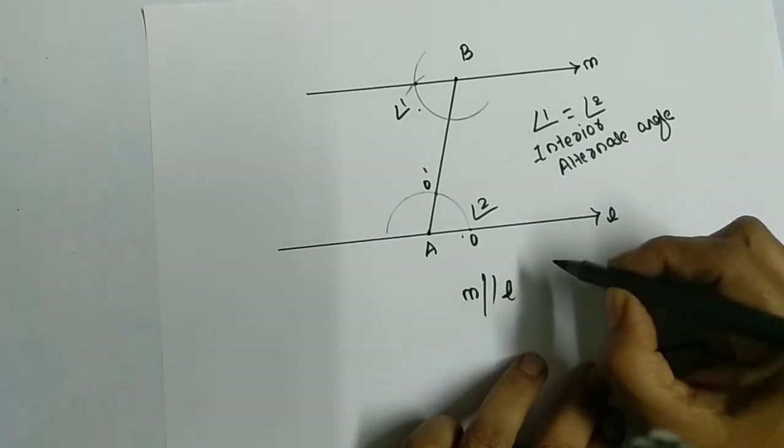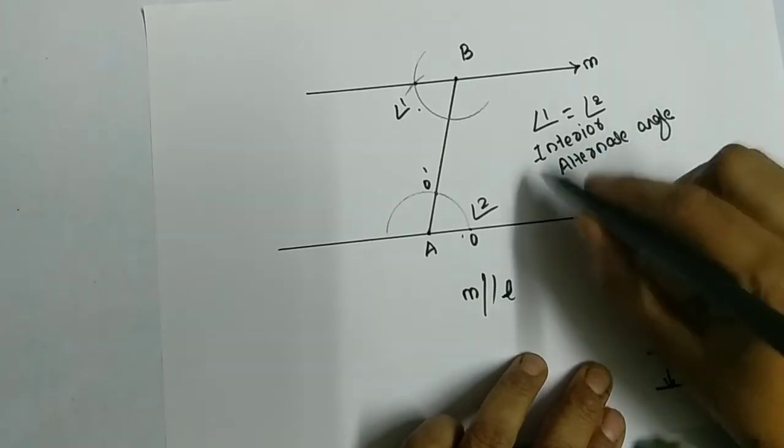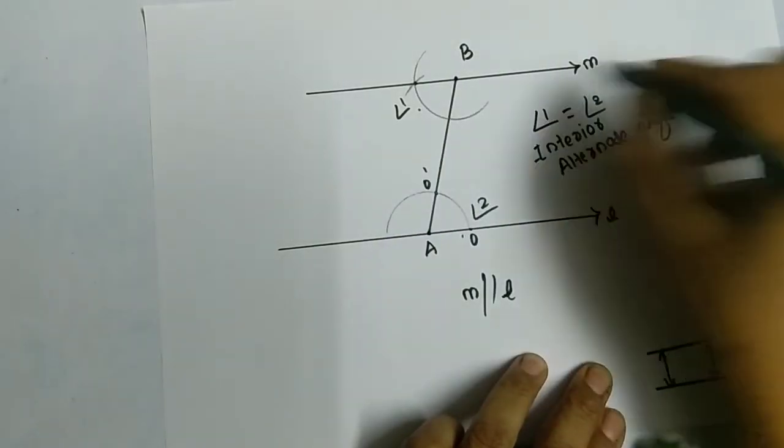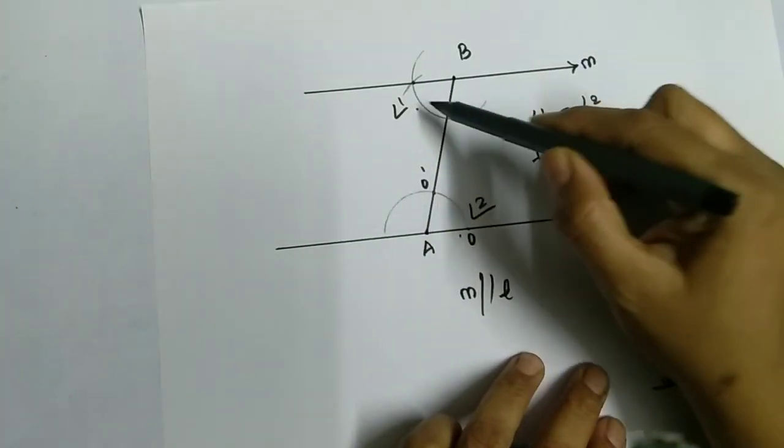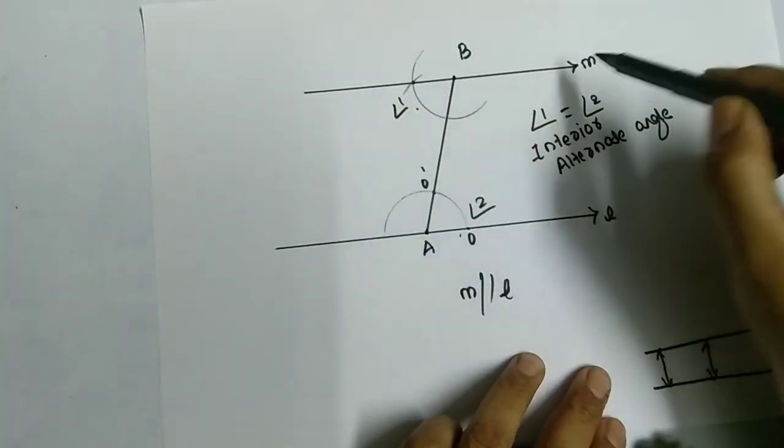So it is just the vice versa. I have used this property and drawn the parallel line. Also, if you come across anytime these angles 1 equals angle 2, you can directly say that these two lines are parallel.